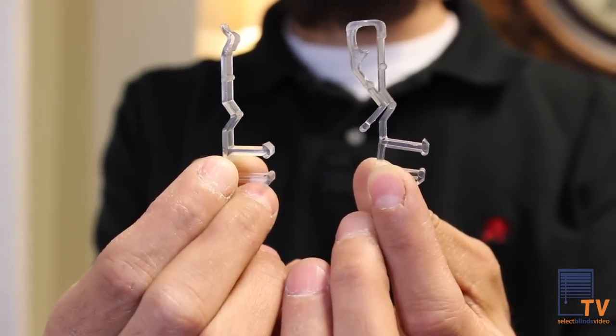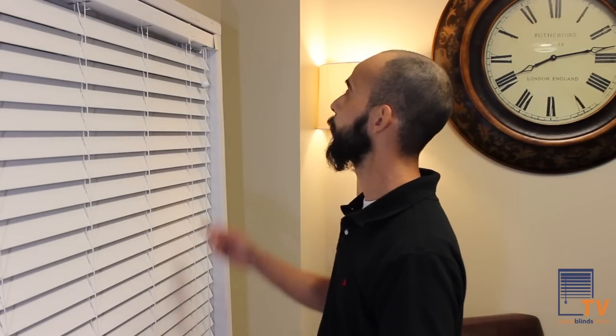The first thing you're going to want to do is take down the balance because you have a broken balance clip. Depending on if both of them are broken or one, that will determine how many you're going to need.